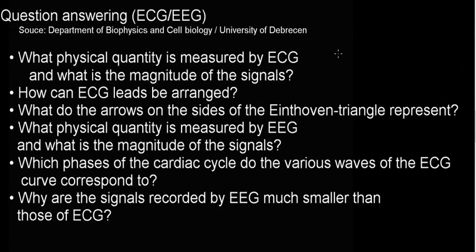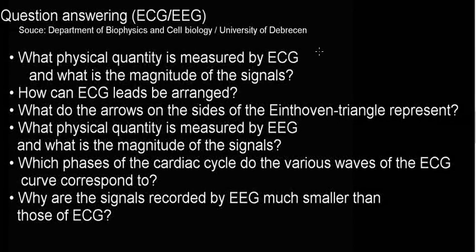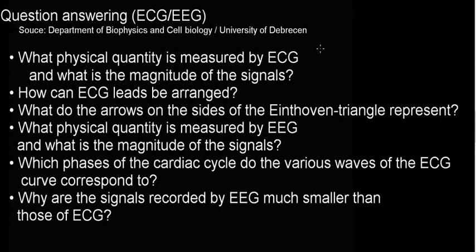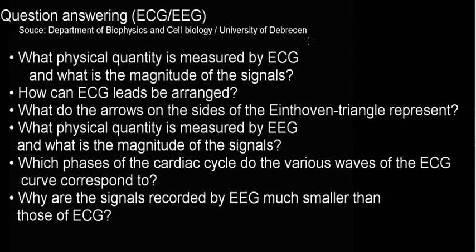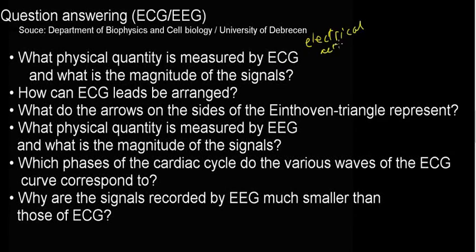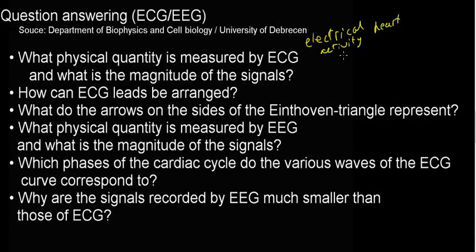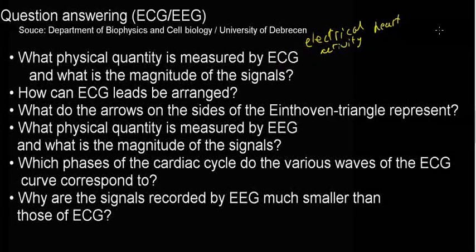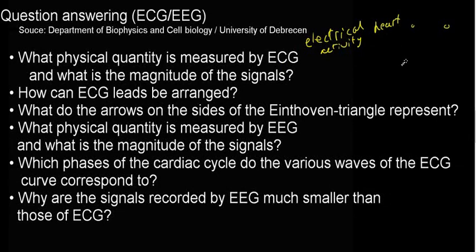Question one: what is the physical quantity measured by electrocardiogram, and what is the magnitude of the signals? Many students say you can measure how the heart contracts or how blood flows — but that would not be correct. The only thing we can measure with an electrocardiogram is the electrical activity of the heart. More specifically, we're measuring the voltage difference between the leads — the two or three leads.